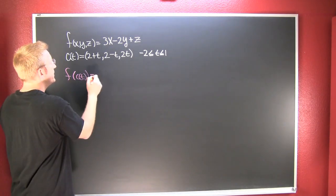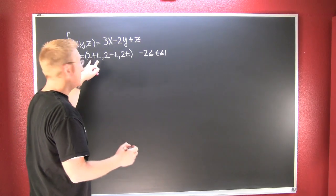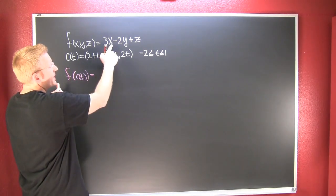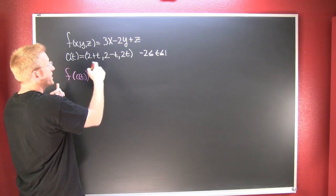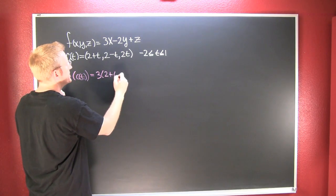Okay, so in doing that, everywhere I see an X, I'm going to put a 2 plus T. So I'm going to have 3 times 2 plus T.